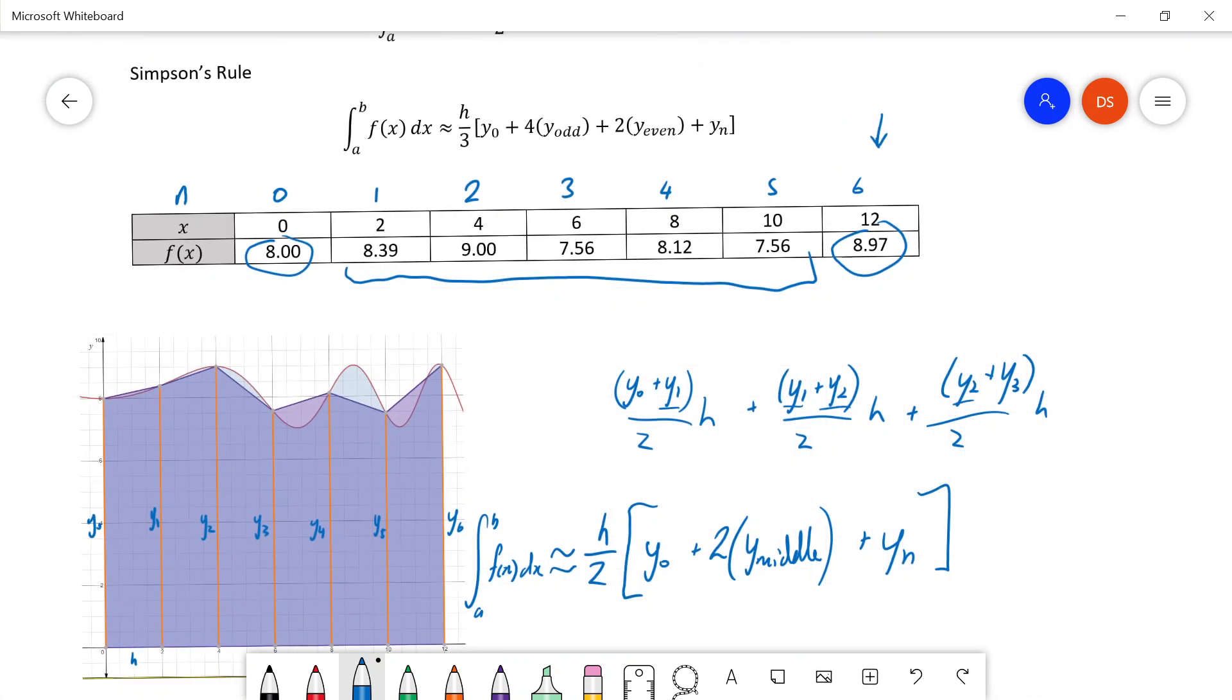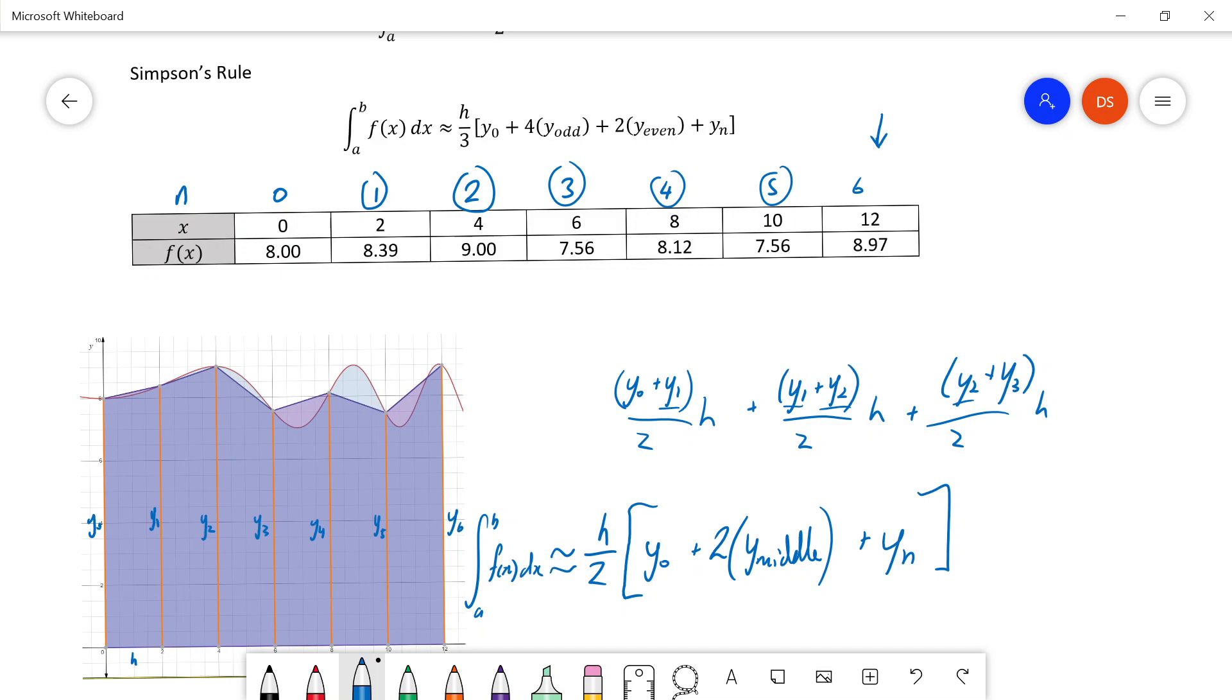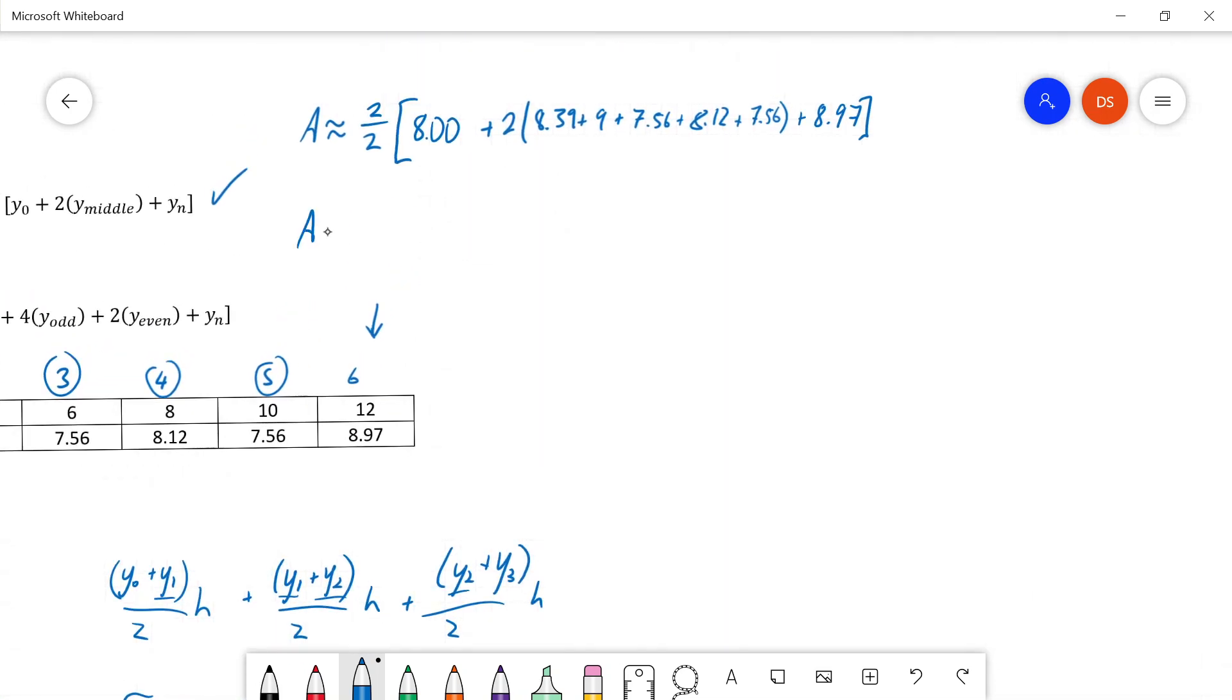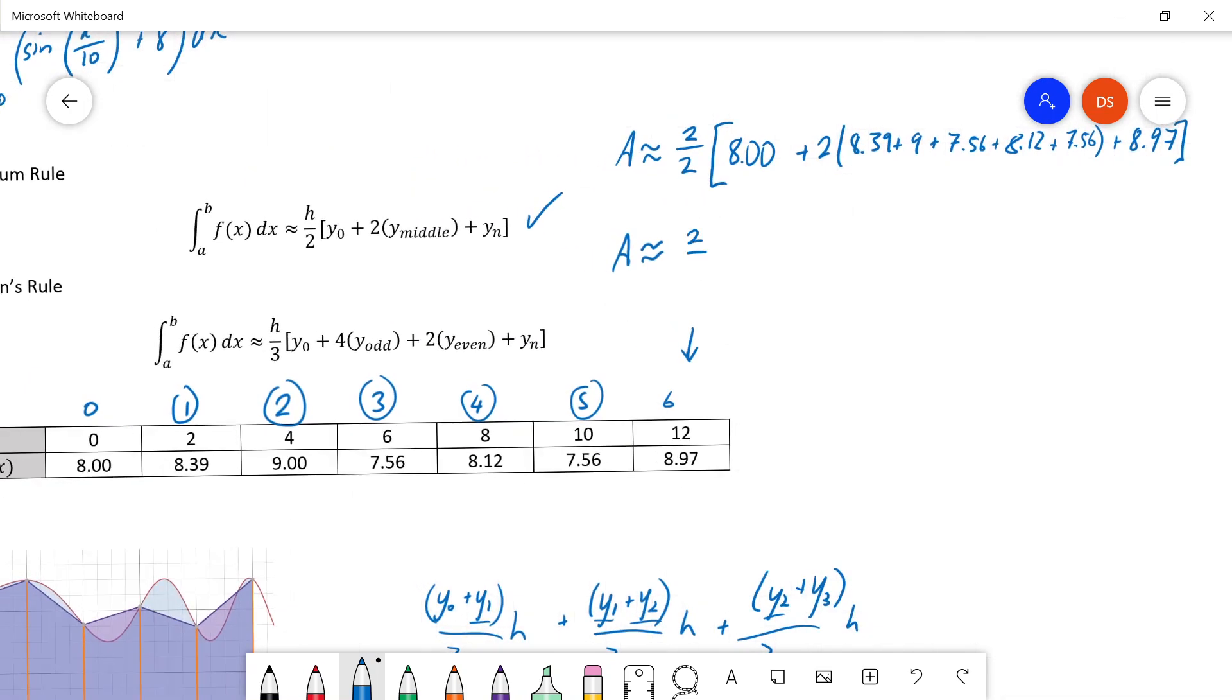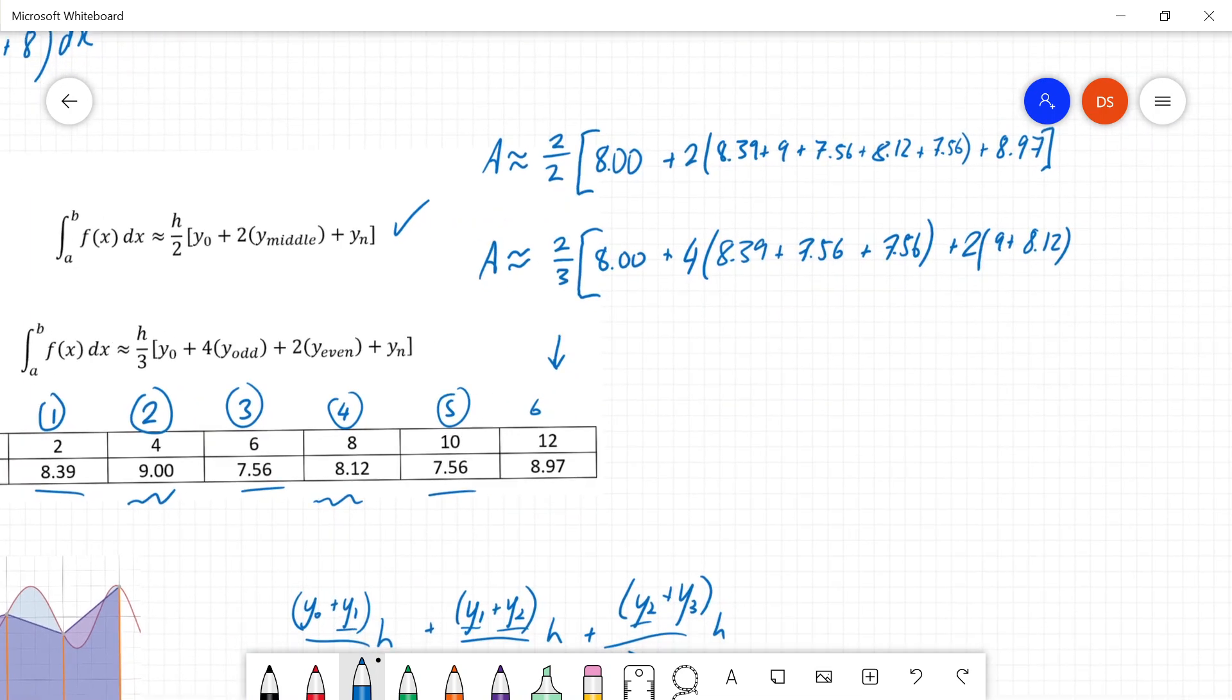Whereas Simpson's rule does something very different, but not super different, but it takes these and it goes, well, this is odd, this is even, odd, even, odd. And so it has the area formula. Area is approximately equal to, let's have a look, the difference divided by 3 this time, and you get the first one, plus 4 times all the odd ones, so that's that, that, and that, plus 2 times all the even ones, so that's this and this, plus the last term.